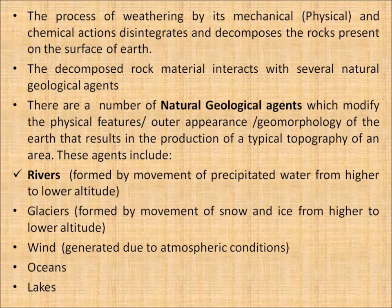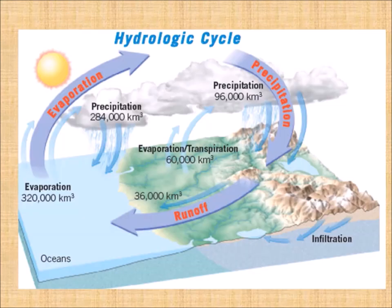What are rivers? Rivers are water that flows from a higher gradient to a lower gradient. Along with rivers, we have glaciers, winds, oceans, and lakes — all of these have been modifying the surface of the earth.